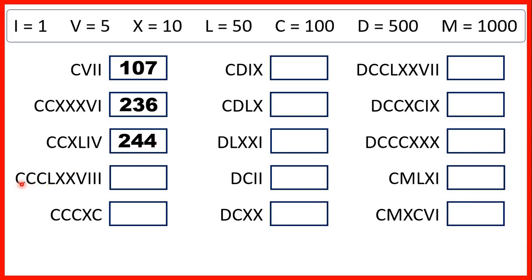Now we have three Cs, so that's 300. We have L and then two Xs, so 50 and then two 10s, which makes 70. And we have V and then three I's, so 5 and then three 1s, which make 8. So we have 378.